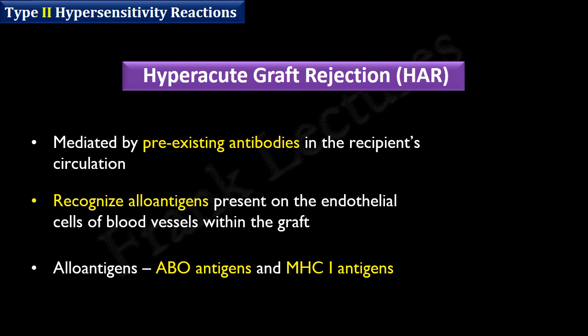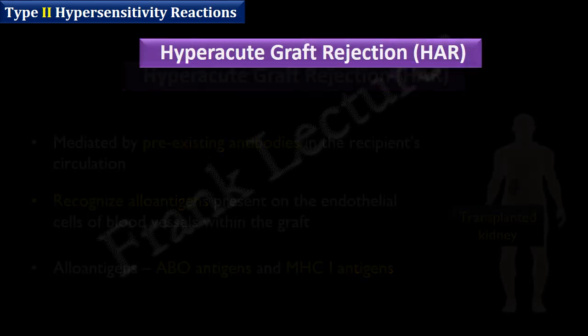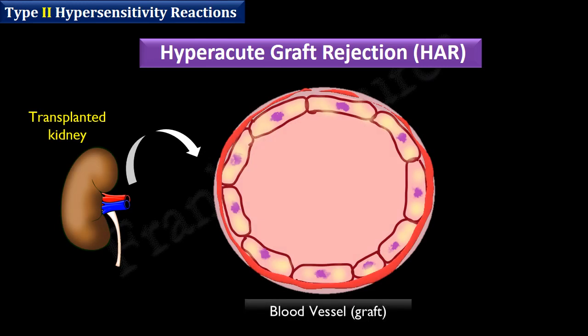ABO antigens are also present on the endothelial cells of blood vessels, which becomes especially critical when the transplanted organ is highly vascularized, such as the kidney. Hyperacute graft rejection occurs when the recipient has pre-existing antibodies against these allo-antigens, which can be formed as a result of previous blood transfusions or transplants. In this image, the transplanted kidney and its blood vessel endothelial cells with allo-antigens are represented.